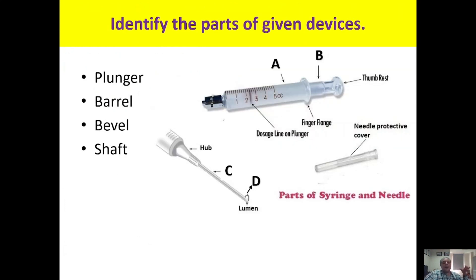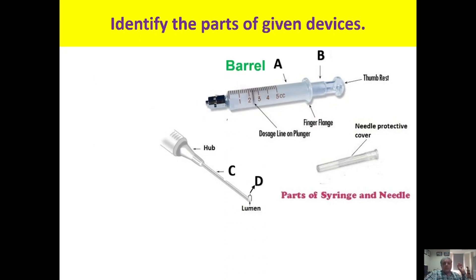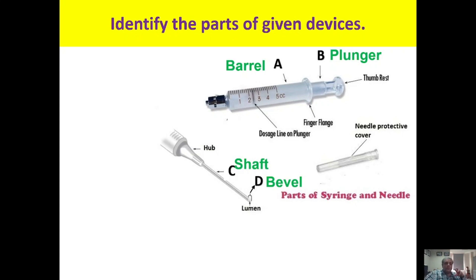Identify the different parts of the syringe and needle. Parts A and B belong to the syringe; C and D belong to the needle. A is the barrel, B is the plunger. C is the shaft of the needle and D is the bevel of the needle. Thank you very much.